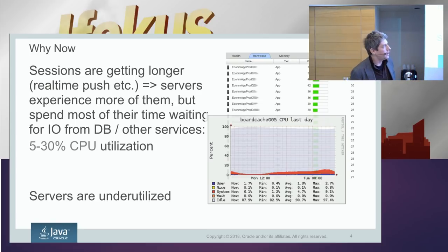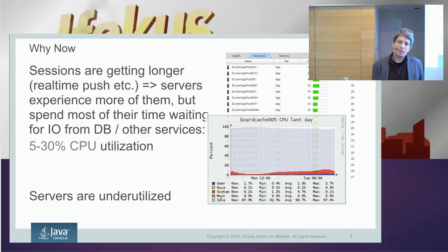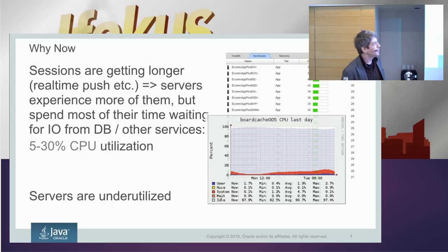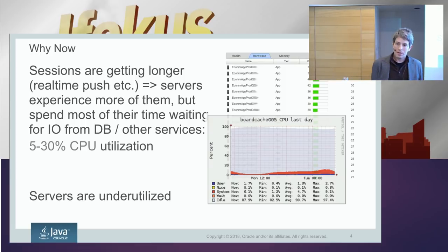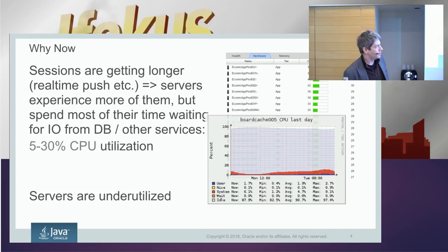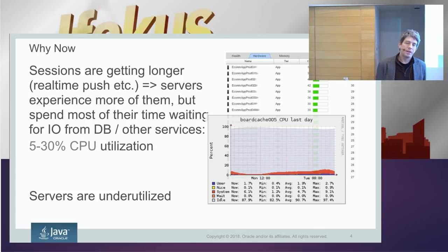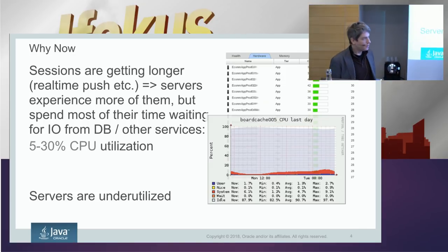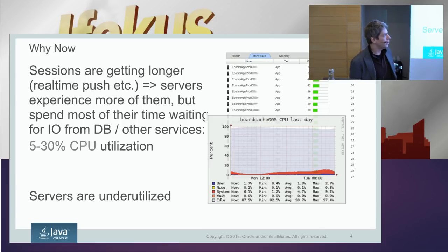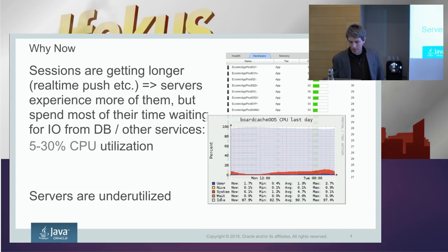The reason we want to do this now is that user sessions speaking to servers are getting longer. You don't just connect, get an HTML page, and disconnect. That means servers experience a larger number of concurrent open connections. If you write code running on ordinary Java servlet containers, you'll find that you spend much of your time just blocking, and CPU utilization is actually very, very low. These are graphs from actual production systems — servers get underutilized.